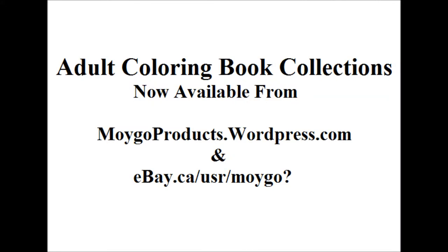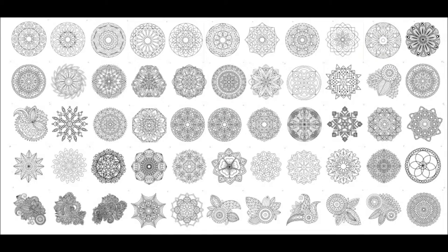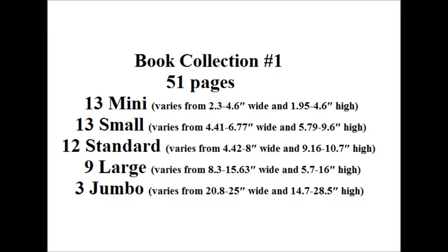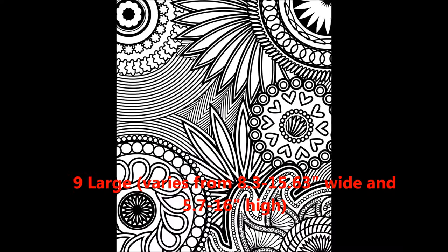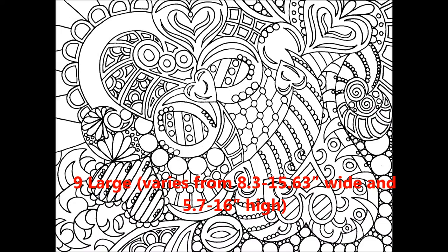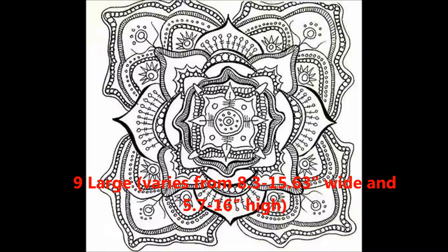The collections, there are three of them. The first one has varying sizes from what I call mini pages right up to jumbo pages, and you will notice in the video that it shows on each one what size it is roughly or what size category it falls under.